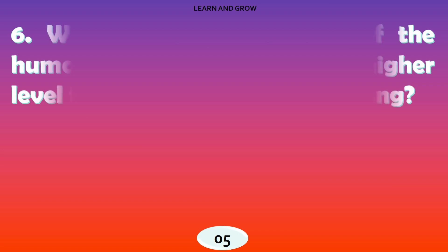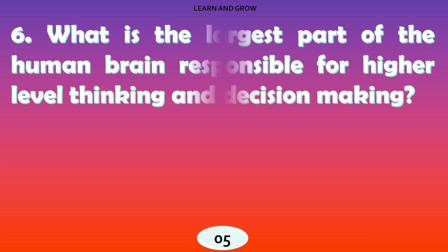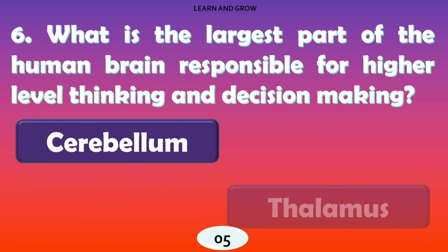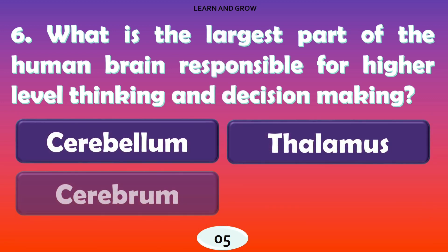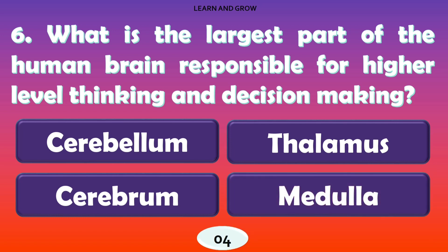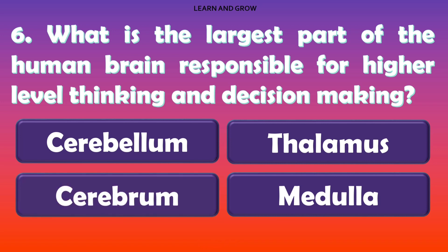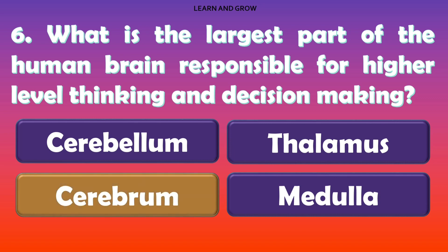What is the largest part of the human brain, responsible for higher-level thinking and decision making? The right answer is option C, cerebrum.